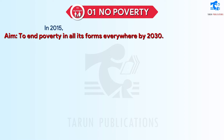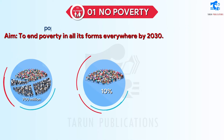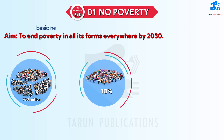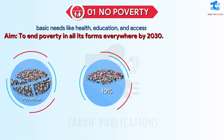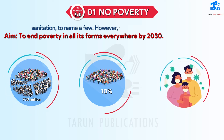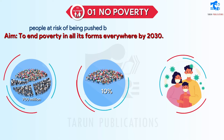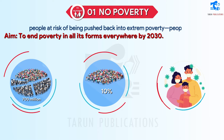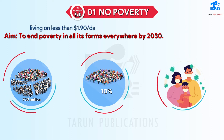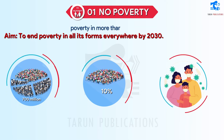In 2015, more than 700 million people, or 10% of the world population, lived in extreme poverty, struggling to fulfill the most basic needs like health, education, and access to water and sanitation. However, the COVID-19 pandemic is reversing the trend of poverty reduction with tens of millions of people at risk of being pushed back into extreme poverty — people living on less than $1.90 per day — causing the first increase in global poverty in more than 20 years.